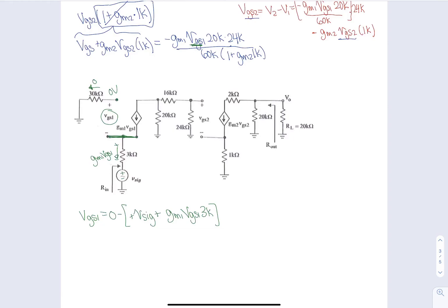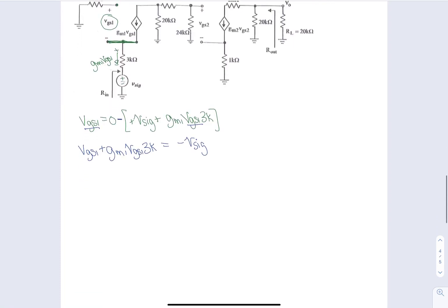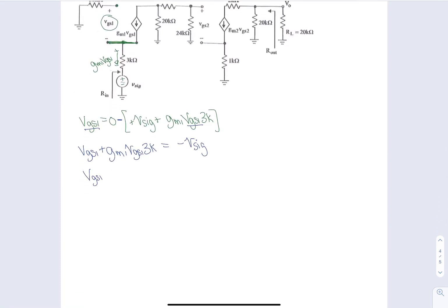And again, I have VGS1 on both sides. So I need to combine those into one. So I bring over from the other side that this is a minus times both those positives. So this will become a positive GM1 VGS1 times 3K minus Vsig. So combining these, I have one plus GM1 times 3K minus Vsig. And then I divide by the one plus GM1 plus GM1 3K. And that will get rid of it from that side.